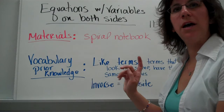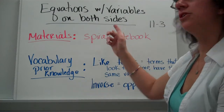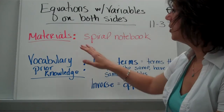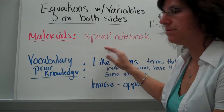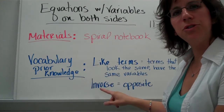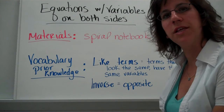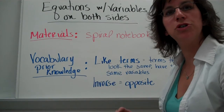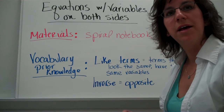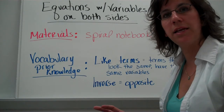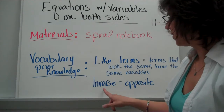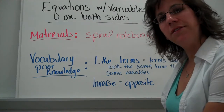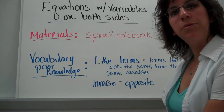Today's lesson is going to be on solving equations that have variables or letters on both sides. You are going to need your spiral notebook, and you're going to need to know these two key terms that I've used in the other algebra videos as well. Like terms — those are terms that are exactly the same: same variables, same plain numbers — those can be put together. And then the word inverse, which of course means opposite. Go ahead and pause the video if you need to, and then come on back and we'll continue on.